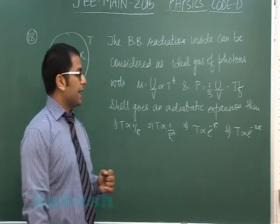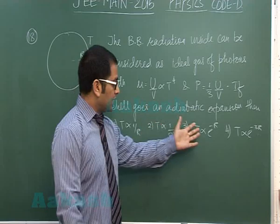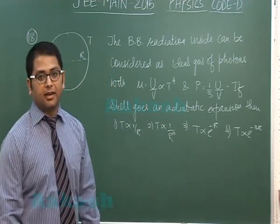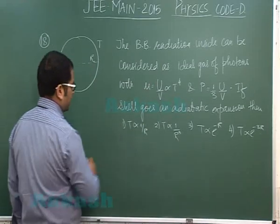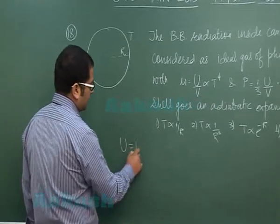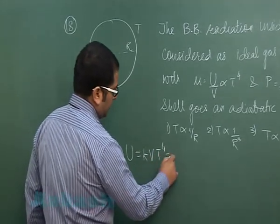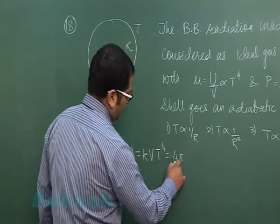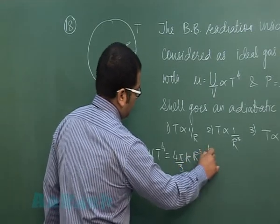If the shell goes through adiabatic expansion, we need to relate temperature and radius. From the first expression, I'll get U as KV T raised to the power 4, and that can be written as 4π/3 K R cubed T raised to the power 4. That's equation number 1.